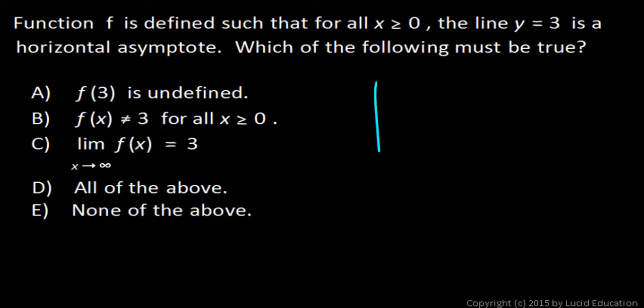So let's make a quick sketch. Here's x and y, and y equals 3 is a horizontal asymptote. So which of the following must be true?